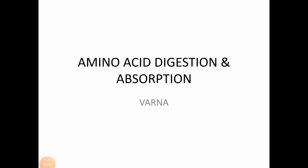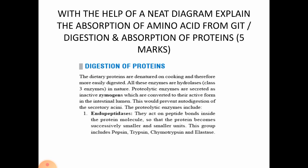Hello everyone, let's revise amino acid digestion and absorption. Probable university questions include: 'With the help of a neat diagram, explain the absorption of amino acid from GIT,' or digestion and absorption of proteins, both for five marks. The absorption of amino acid alone can also be asked for three marks. If only absorption is asked, you explain the Meister cycle, that is the gamma glutamyl cycle.